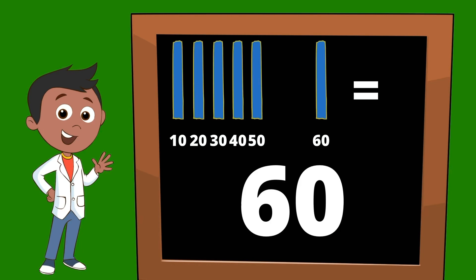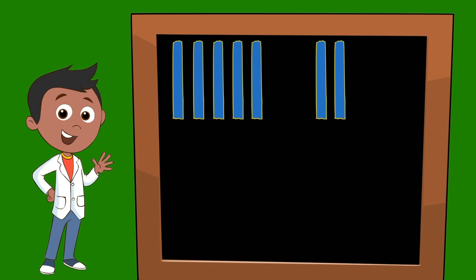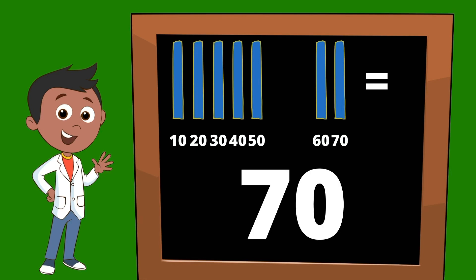I bet you'll do great with one more. What would seven ten sticks be? Let's count. Ten, twenty, thirty, forty, fifty, sixty, seventy. Seven ten sticks would be equal to seventy.